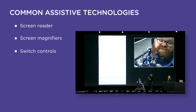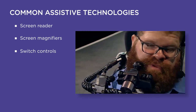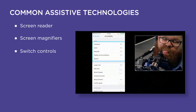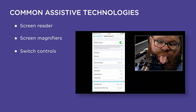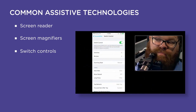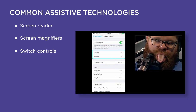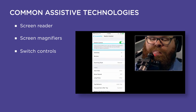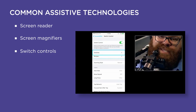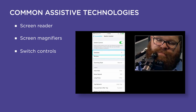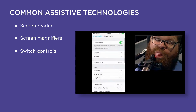Another assistive technology involves switch buttons. From left to right: button one is called move back or move previous; the middle button is select; and the third button is move next.